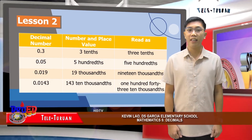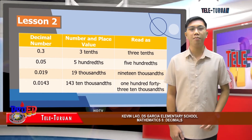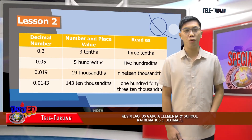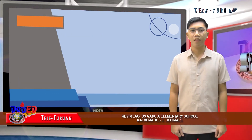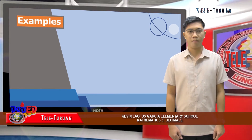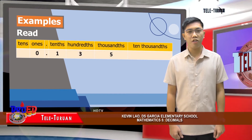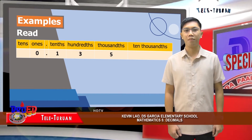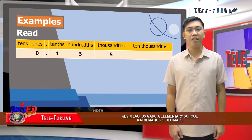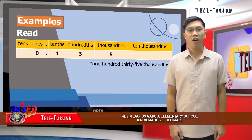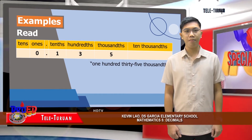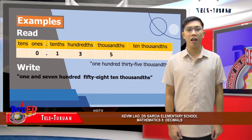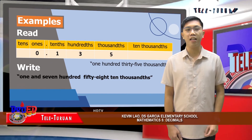When writing decimals, remember that one decimal place means tenths, two decimal places mean hundredths, and so on. Let's study these examples. We can use the place value chart to guide us in writing and reading decimals. For example, number one: we read the given digit as one hundred thirty-five thousandths. For number two: one and seven hundred fifty-eight ten-thousandths is written in decimal form like this.